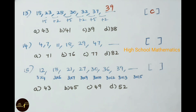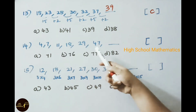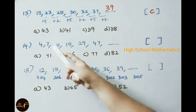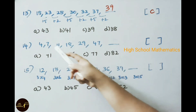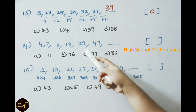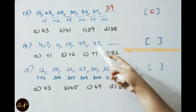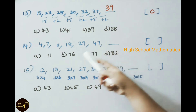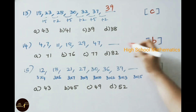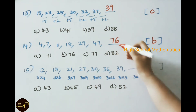Fourteenth practice problem: 4, 7, 11, 18, 29, 47 — find the next term. It is a Fibonacci series: 4 plus 7 is 11, 7 plus 11 is 18, 11 plus 18 is 29, 18 plus 29 is 47, and 29 plus 47 is 76. The answer is option B, 76.